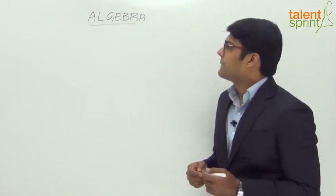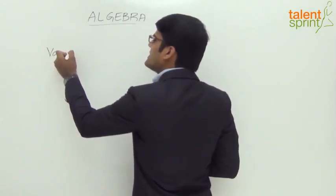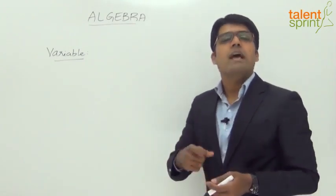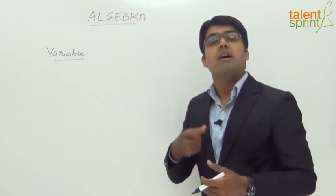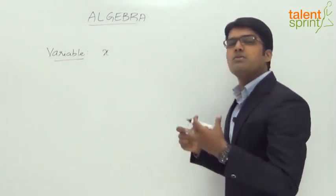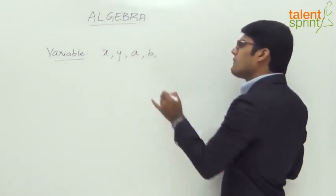Before we go ahead and discuss various formulae and the different types of questions, let us understand a few important terms used in algebra. We have something called a variable. What is a variable? A variable is a symbol — a letter which is used to denote an unknown number. It represents an unknown number or unknown value. We generally use x — the most commonly used variable is x — or it can be any other letter: y, a, b, or for that matter any symbol like a dollar sign.